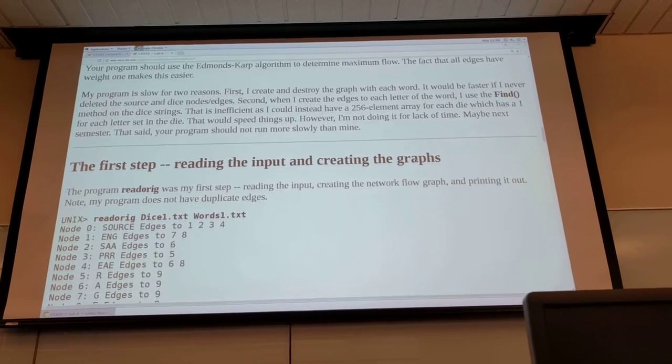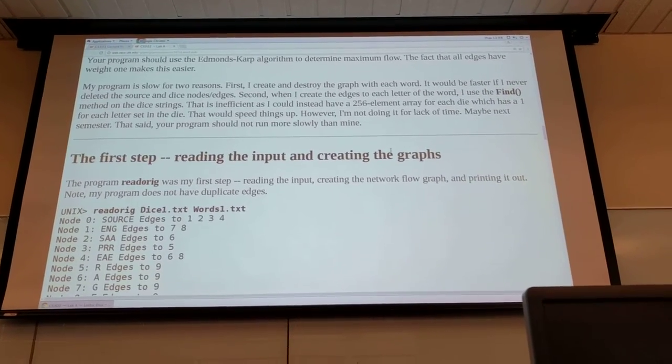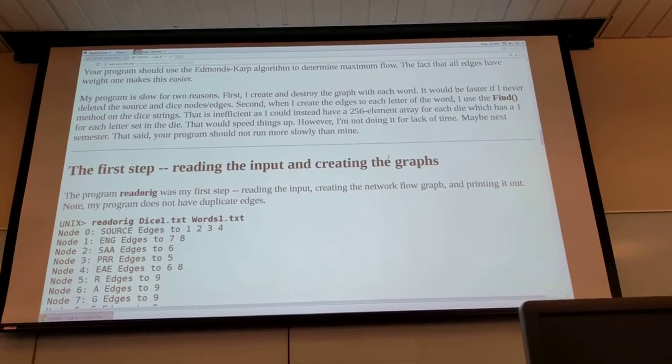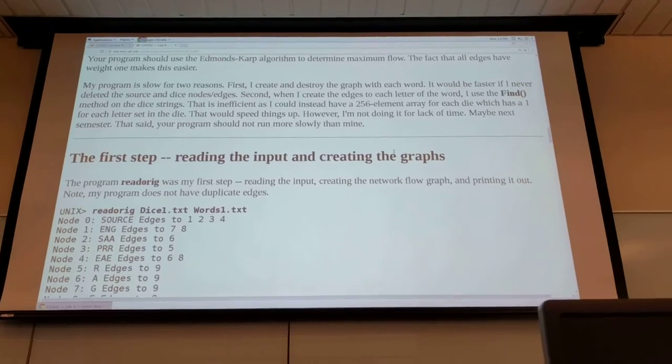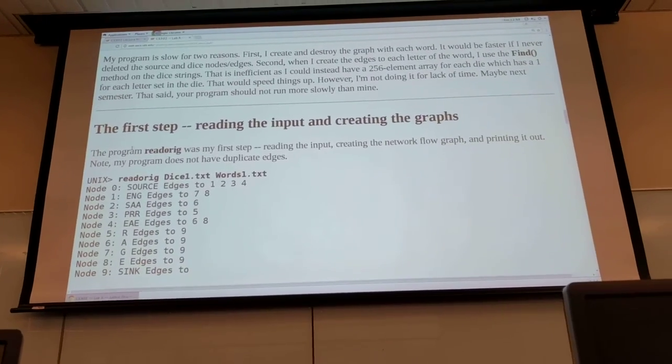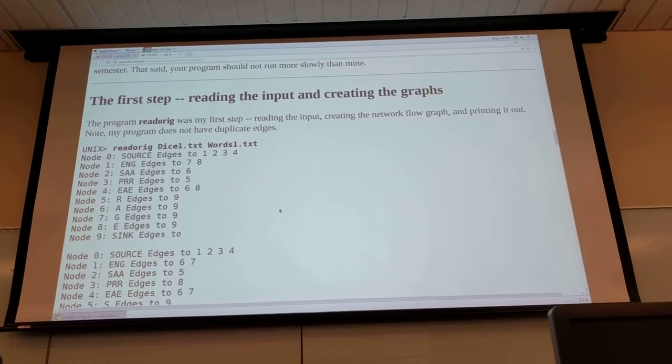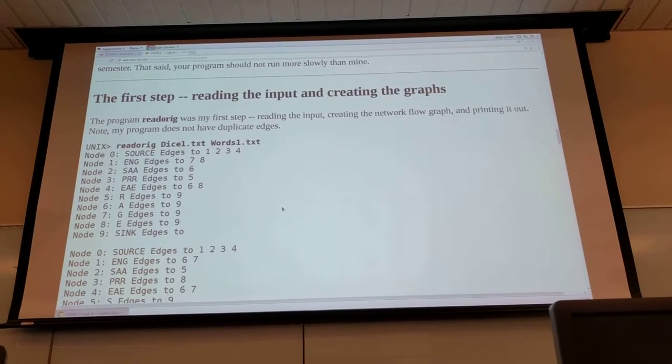So the first step to solving this problem is to read in the die and the words and create the graph. And he has a program called read original that does this first step. So it will read the input and create the network flow graph and print it out.